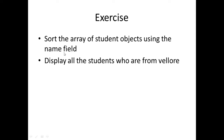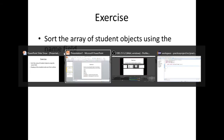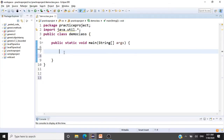After completing exercise one, we'll sort the array of student objects using the name field in ascending order. Next, we'll display all students who are from Vellore — their address should contain Vellore as one of the parameters. These are the three exercises we'll be taking up now. Let's start coding.